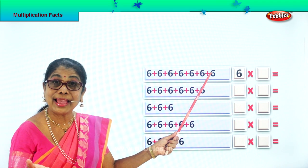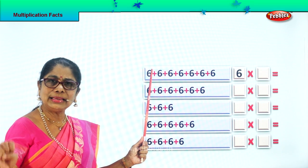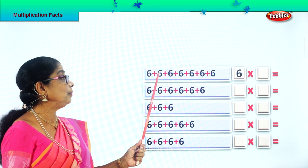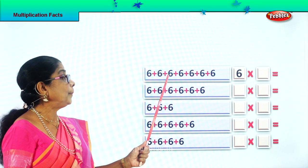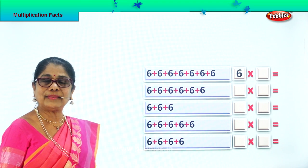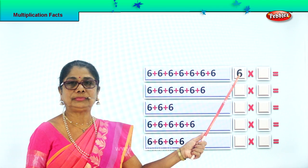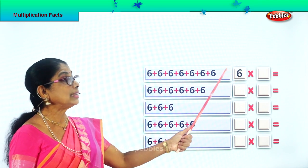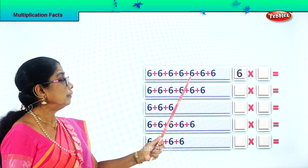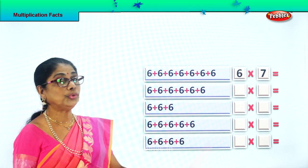Now we are looking at multiplication fact. Let's add. What is 6 plus 6? Count up from 6: 7, 8, 9, 10, 11, 12. What is 12 plus 6? Let's add. Count up all the 6s we have. How many times 6? 1, 2, 3, 4, 5, 6, 7. 6 how many times? 7.